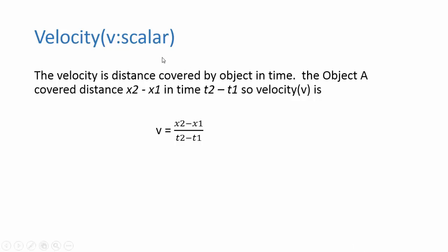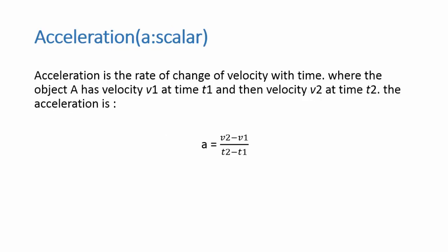So velocity is the distance covered by object in time. Object A covers distance x2 minus x1 in time t2 minus t1. So velocity V is x2 minus x1 upon t2 minus t1. In scalar format, the distance divided by the difference in time is the velocity.